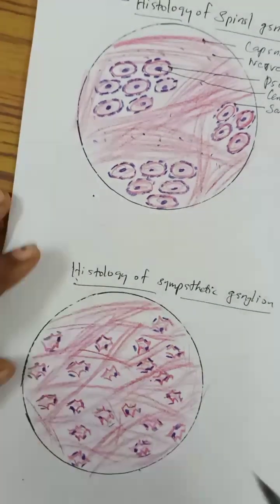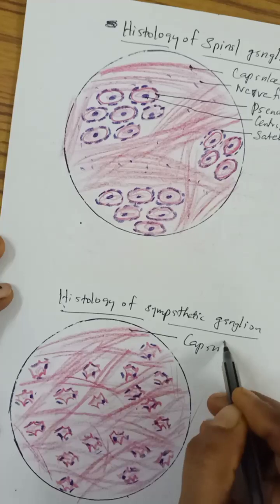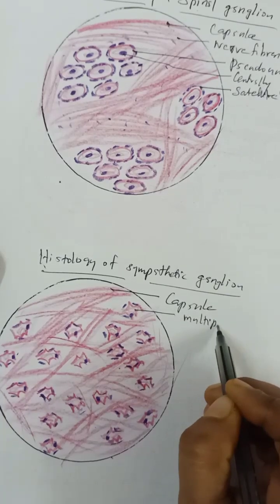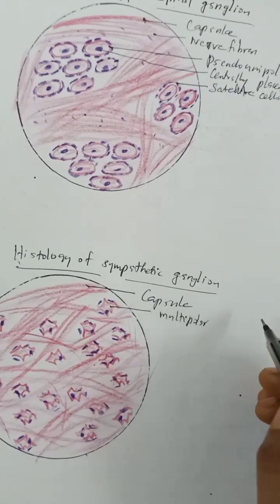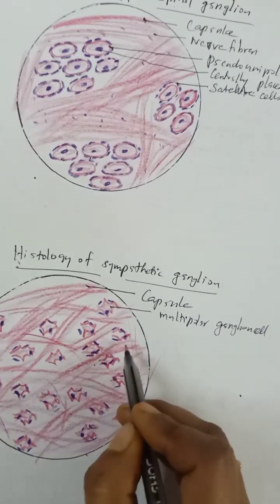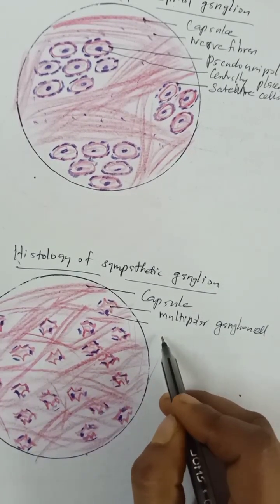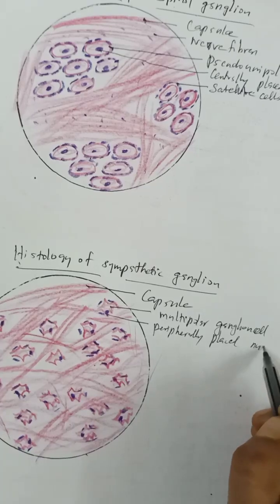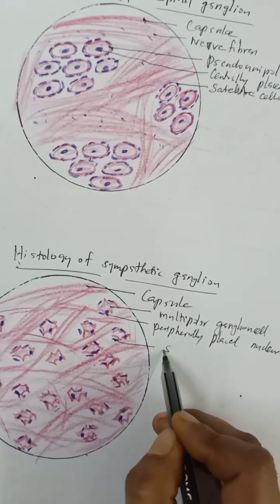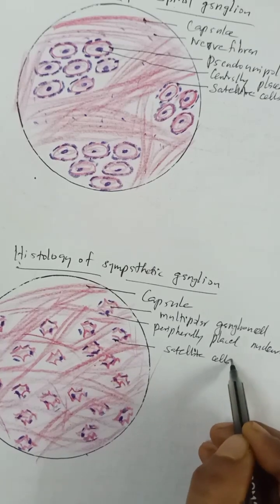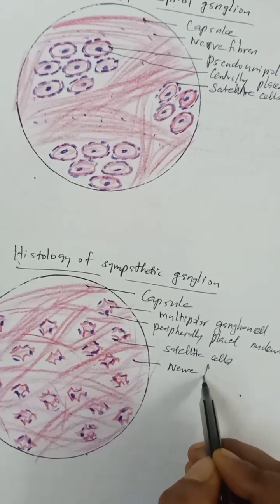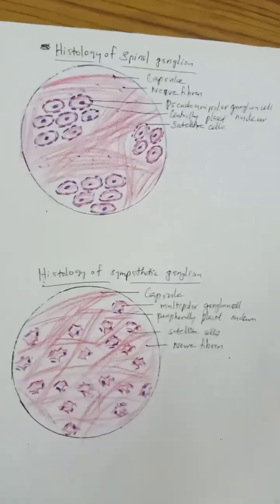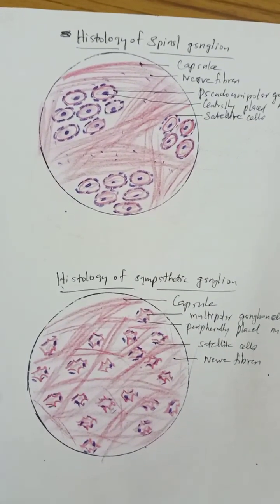Labeling the sympathetic ganglion diagram: here is the capsule, this is the multipolar ganglion cell, and this is the peripherally placed or eccentrically placed nucleus. Satellite cells are present here, and these are the nerve fibers. These are the key differences between the spinal and the sympathetic ganglion.